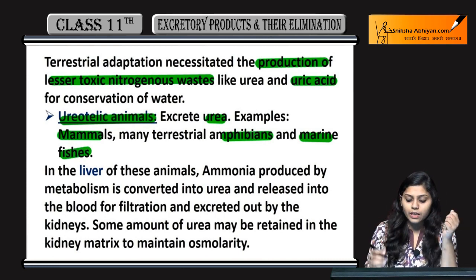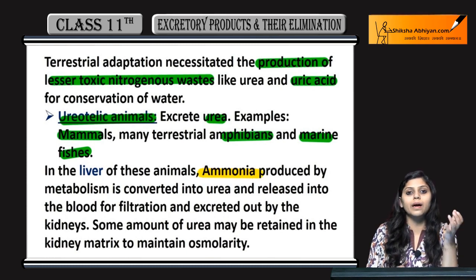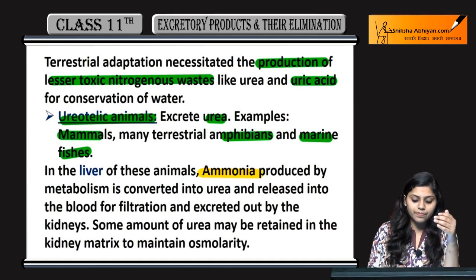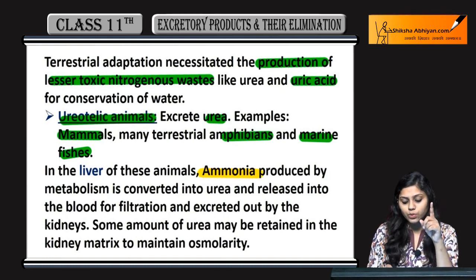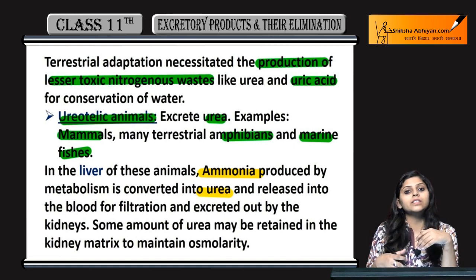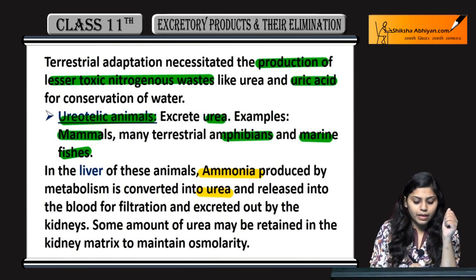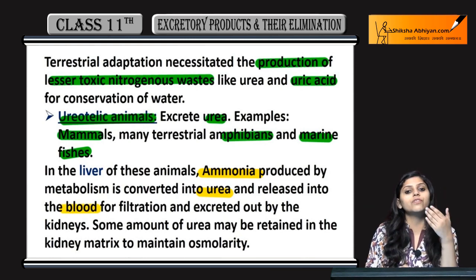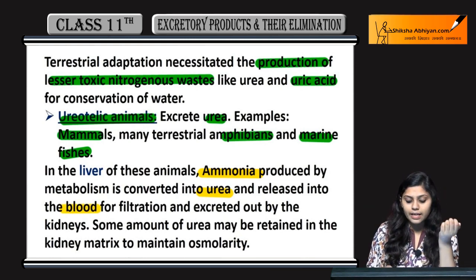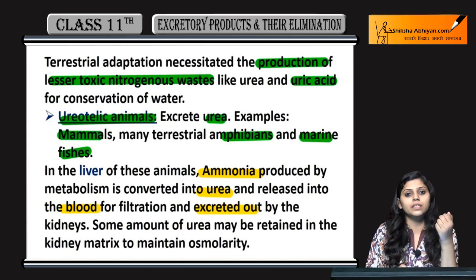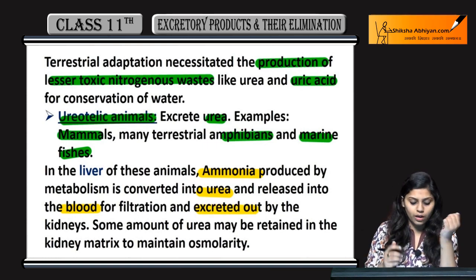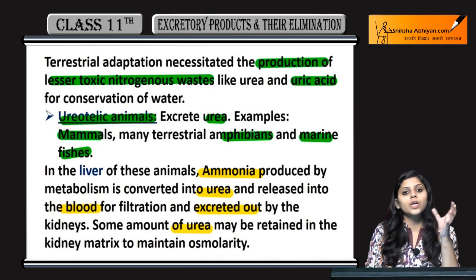In the liver of ureotelic animals, ammonia is produced by metabolism, which is further converted to urea and then released into the blood. Ammonia produce hoga liver mein, urea mein convert hoga, and then blood mein jayega for filtration, and then excreted out by the kidney.